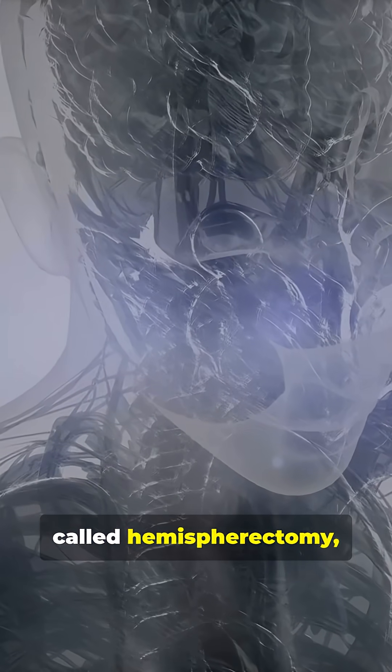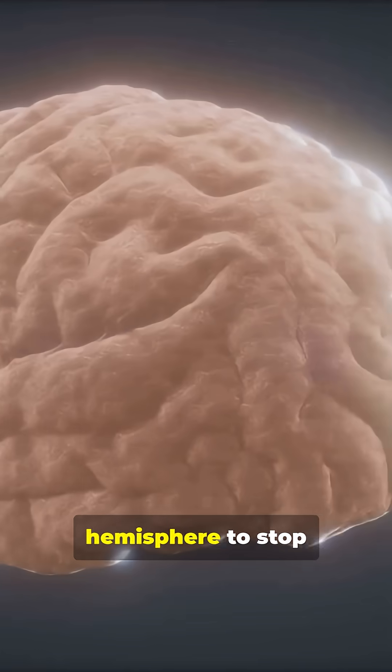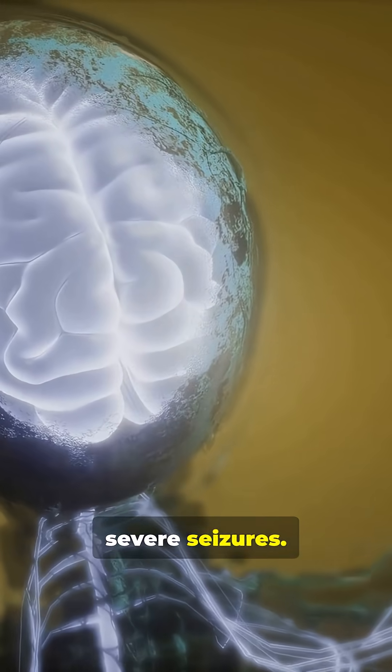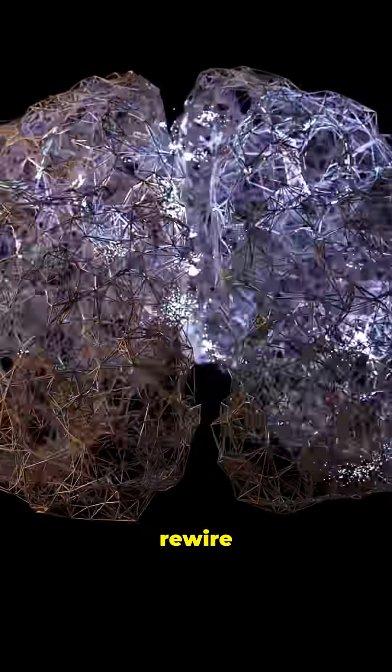In rare cases called hemispherectomy, surgeons remove or disable one brain hemisphere to stop severe seizures. The shocker, especially in kids, the remaining hemisphere can rewire itself.